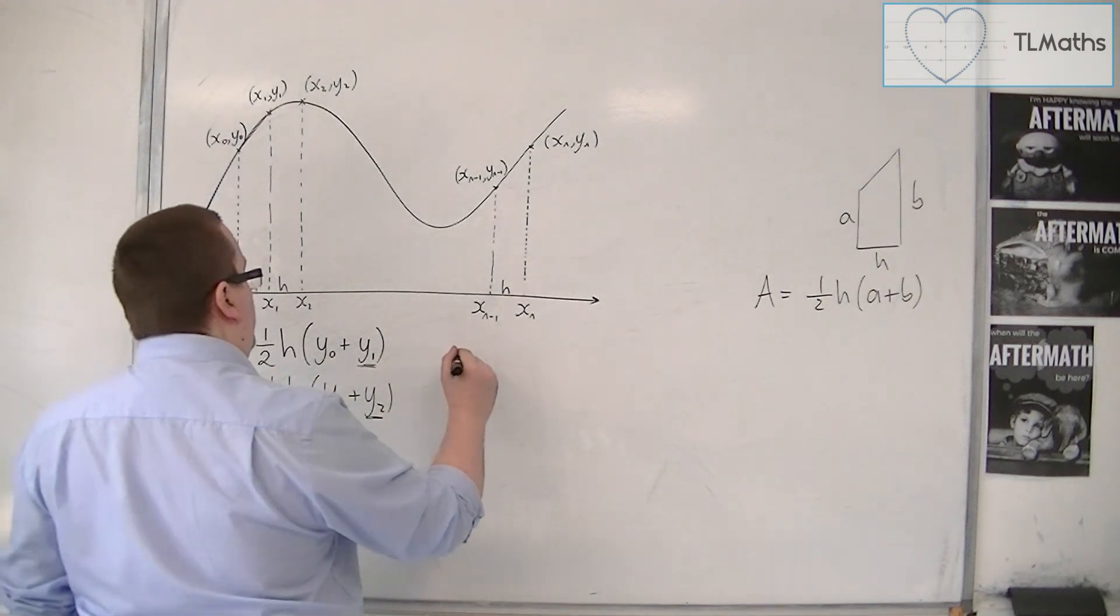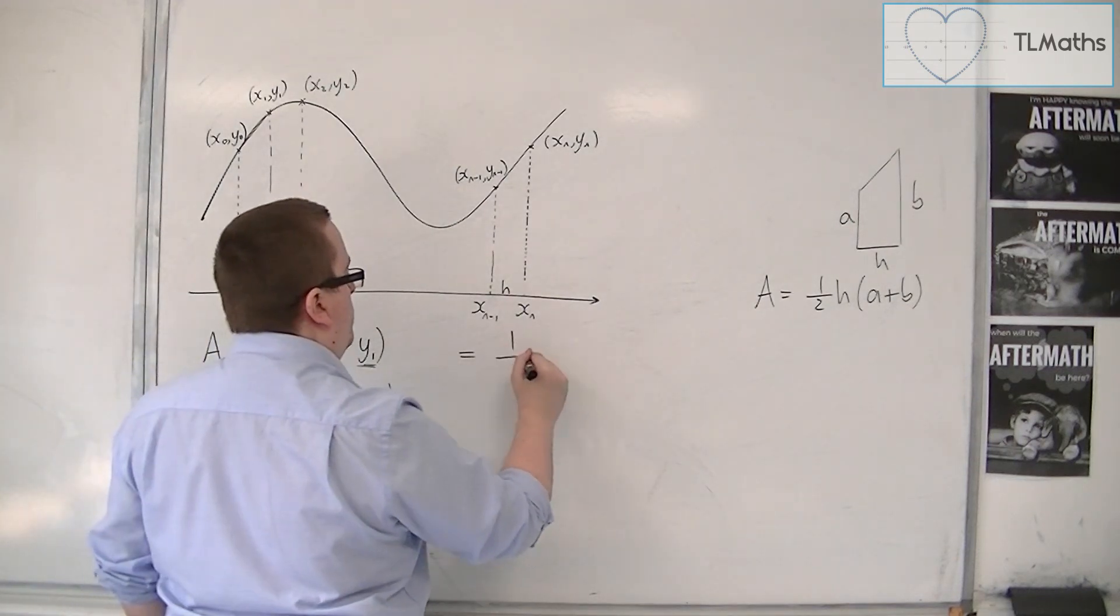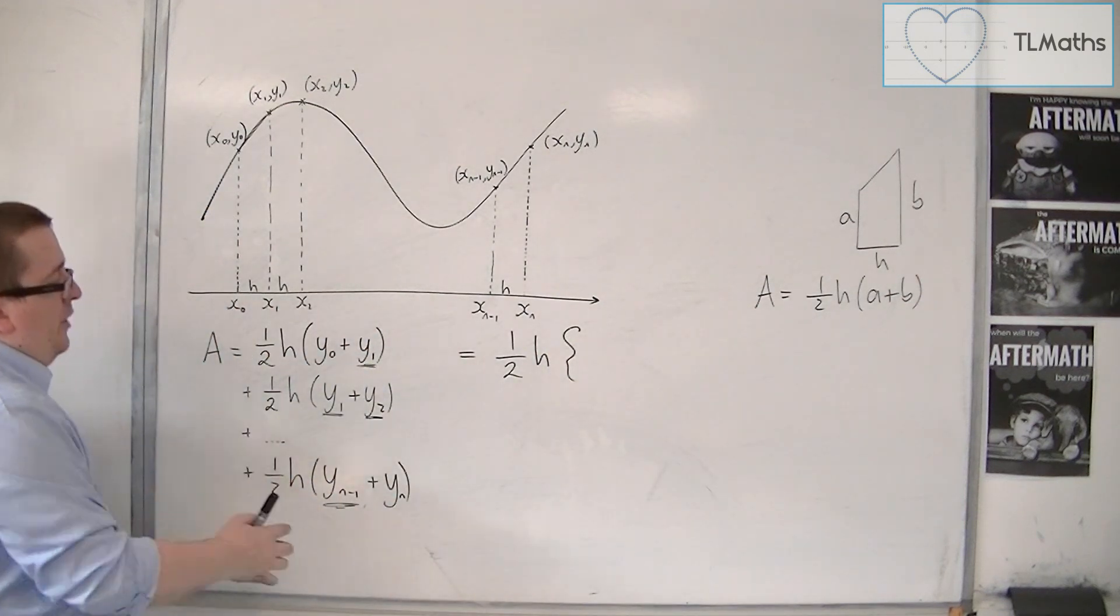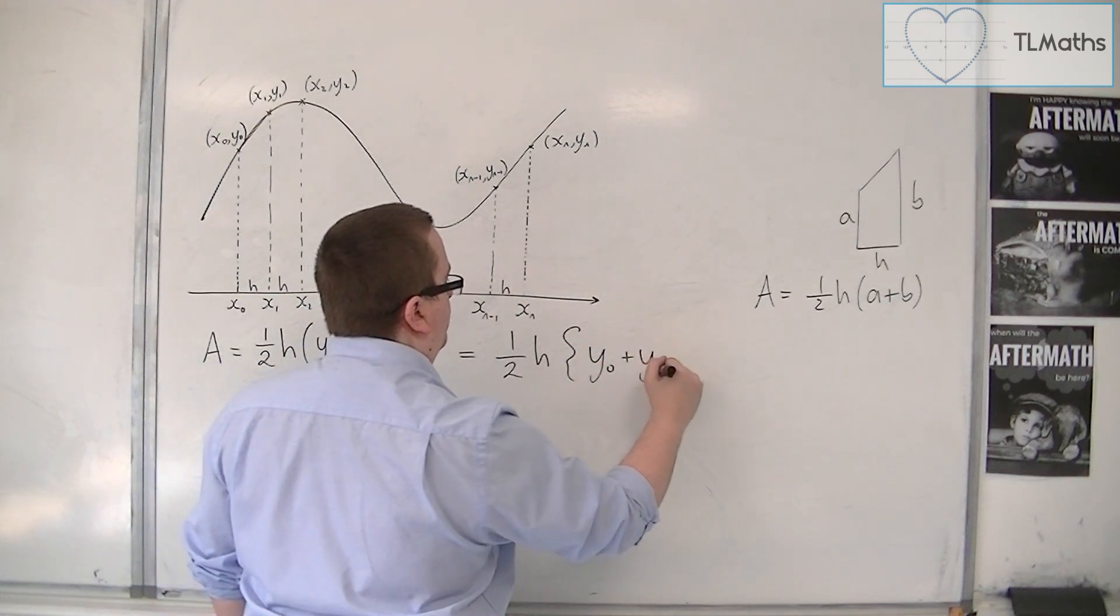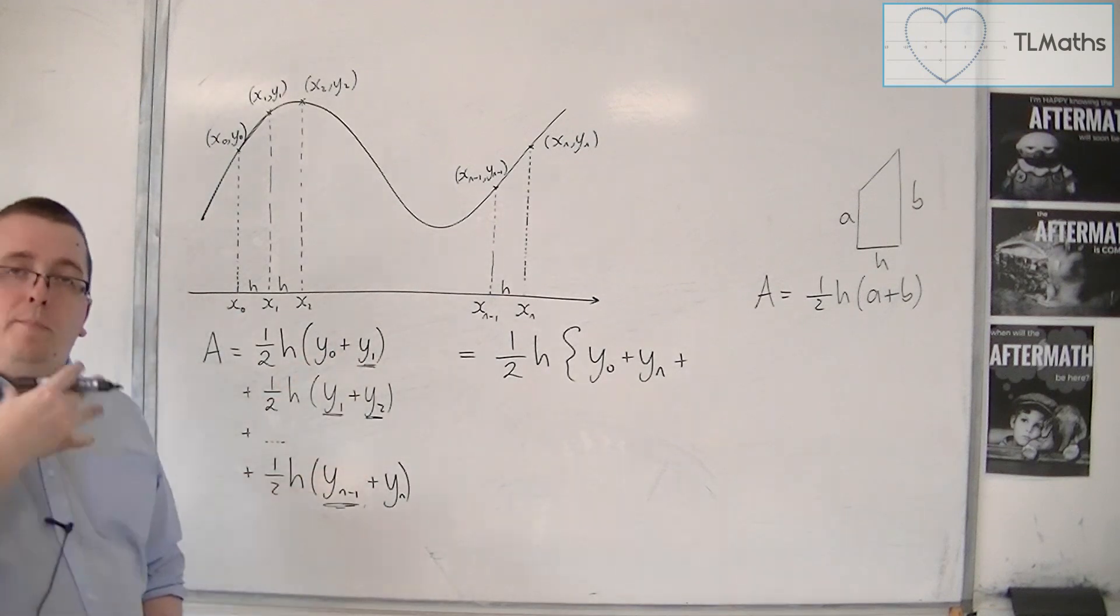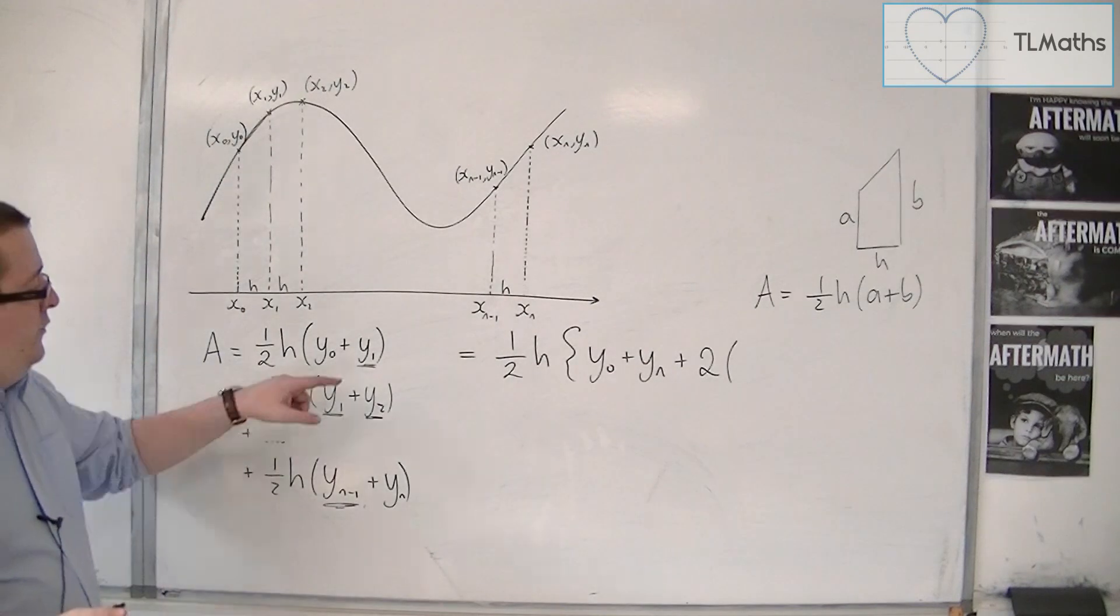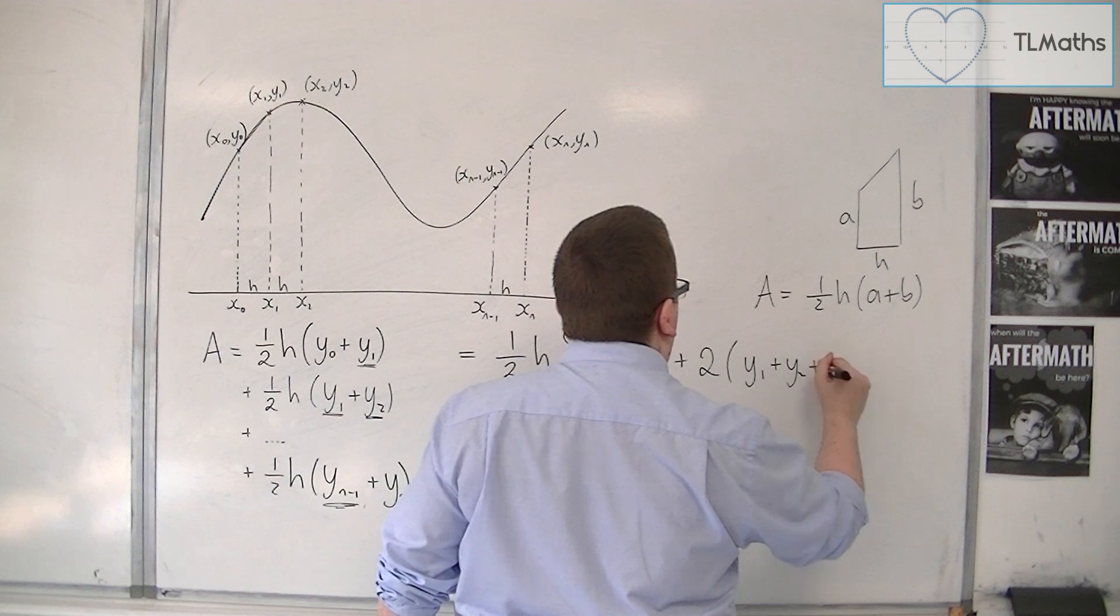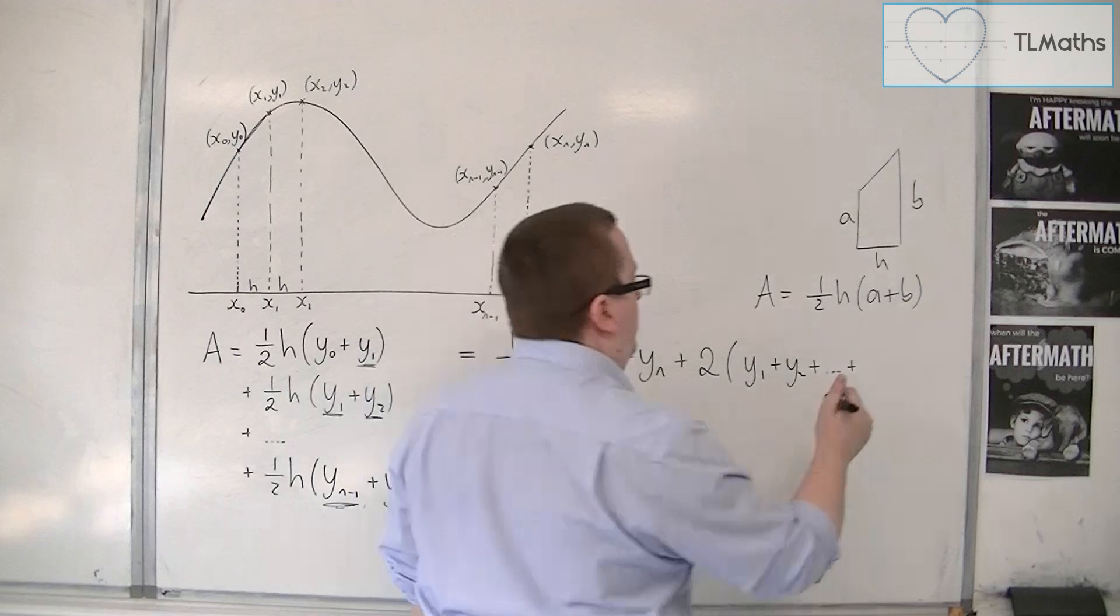So what I can now do is factorise this, because each of these has a 1 half h, which I can bring out the front, and I've got this y0 and the yn, so I'll write those down first, plus each of the other ones is repeated, has a repetition, and so it's two lots of the rest. So I've got this y1 plus y2 plus y3 plus y4 plus y5, all the way up to yn minus 1.